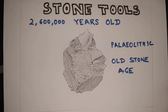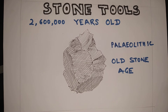The Stone Age is divided into three periods: the Paleolithic period, or Old Stone Age; the Mesolithic period, or Middle Stone Age; and the Neolithic period, or New Stone Age.